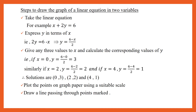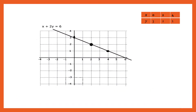Therefore, we have the three solutions as (0, 3), (2, 2), and (4, 1). Now, take a graph paper and plot these points. Draw a line passing through them, and we can see the straight line of the linear equation x plus 2y is equal to 6. It is always advisable to plot more than 2 points so that the correctness of the graph can be checked.